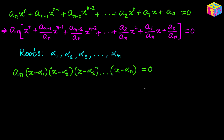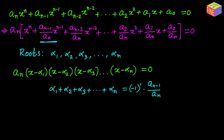If we multiply all factors together and expand, it will follow the same pattern seen for quadratic, cubic, and quartic equations. The coefficient of the x to the power n minus 1 term will be the sum of all roots, and that equals negative 1 to the power 1 times a sub n minus 1 over a sub n, where a sub n is the leading coefficient and a sub n minus 1 is the coefficient of the x to the power n minus 1 term. In sigma notation this is a very important relationship.